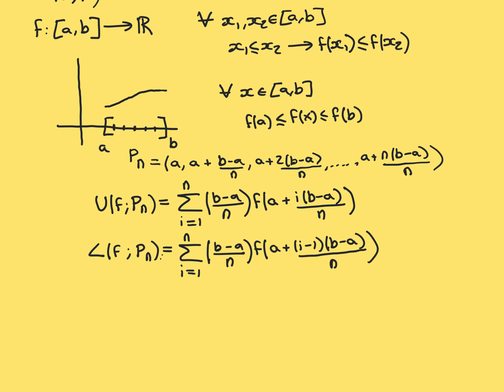So the value of the function at the lower bounds of the subintervals is the thing we need here in the lower Riemann sums. It's a similar sort of formula: f at a plus (i−1) times (b−a)/N. Let's just check that this works — starting with the first subinterval, i equal to 1.